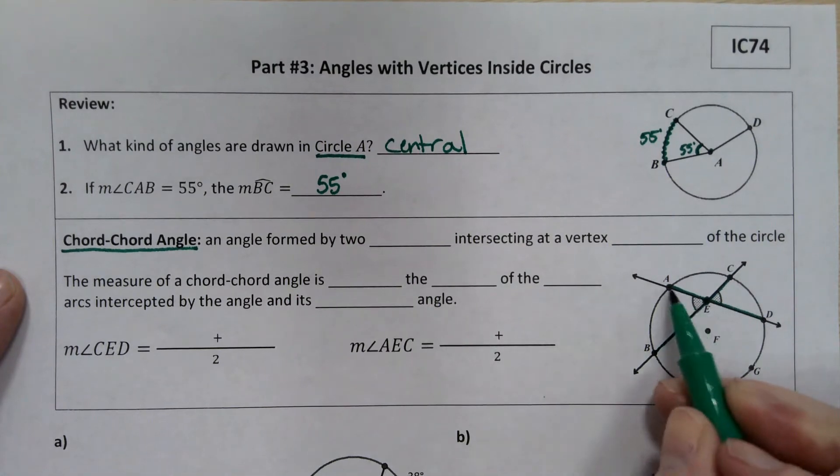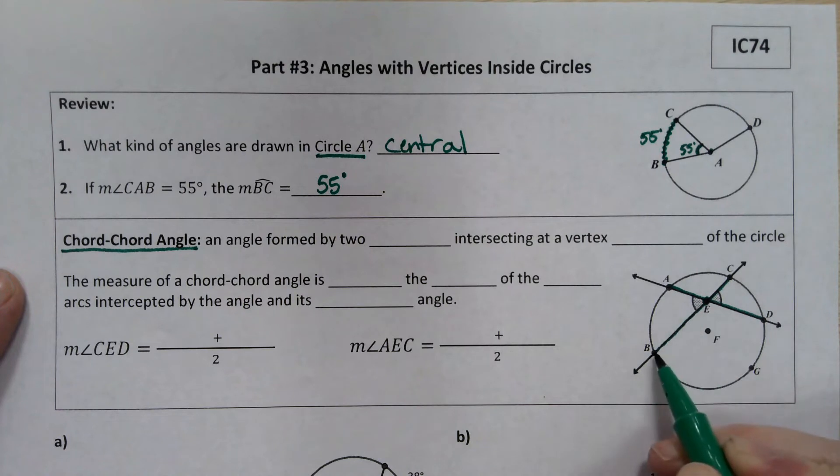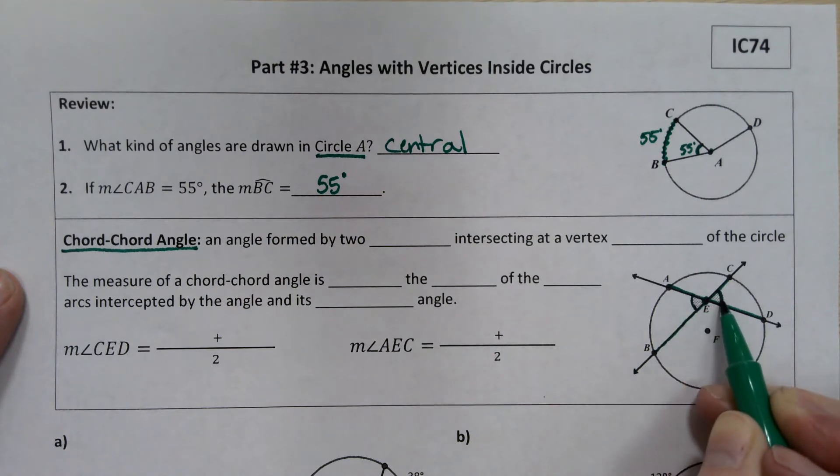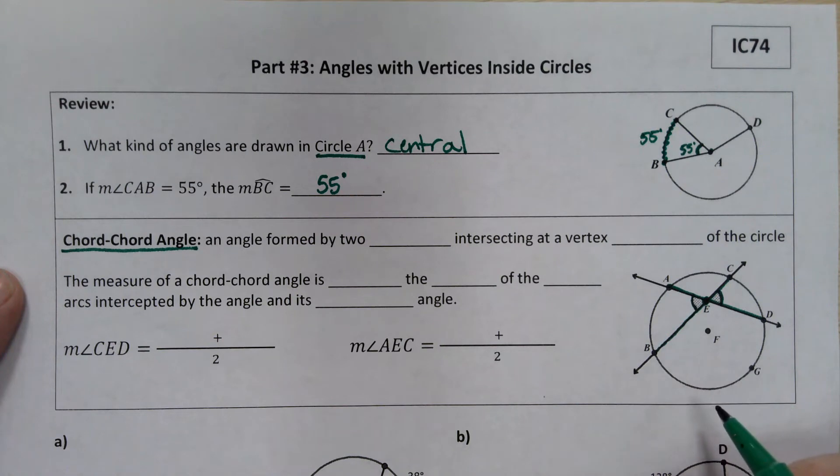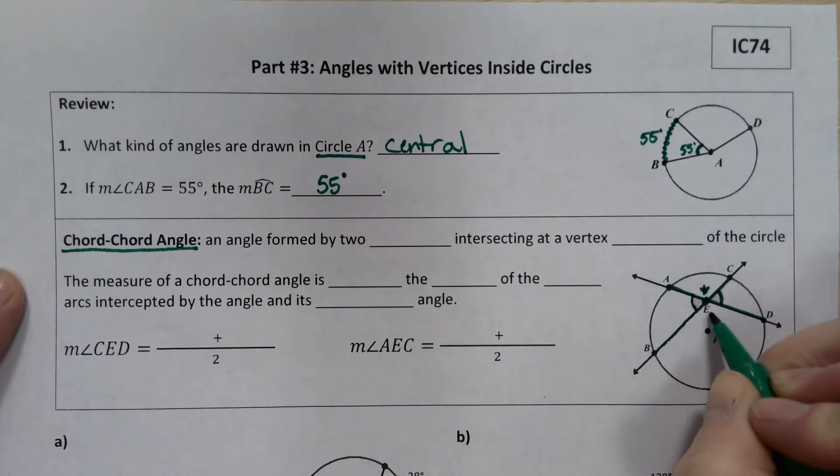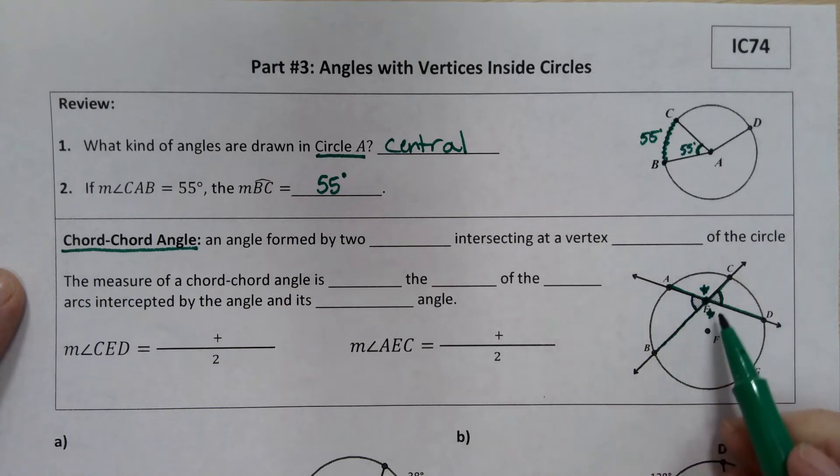And when those two chords, those segments that have both endpoints on the circle intersect, they actually create this pair of angles that are marked with those congruent marks and a second pair of angles. So there are four angles that are considered chord-chord angles sitting right here. They come in pairs because these are our vertical angles back from first semester.